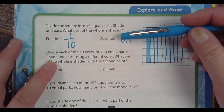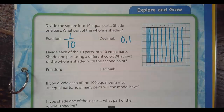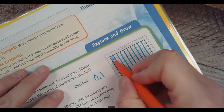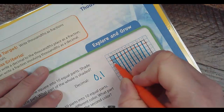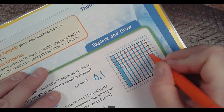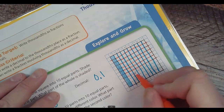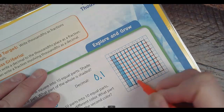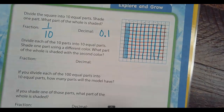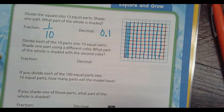Then it says divide each of the ten parts into ten equal parts. I'm drawing lines the other way. I'm going to use a different color so you can see it better — you don't have to. If I go the other way, I'm dividing them each into little parts. I'm not super picky, as long as you can kind of see what you did.